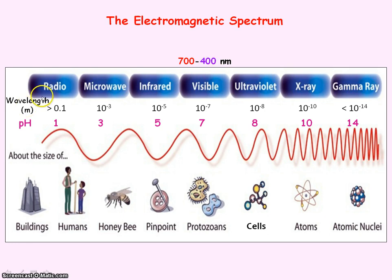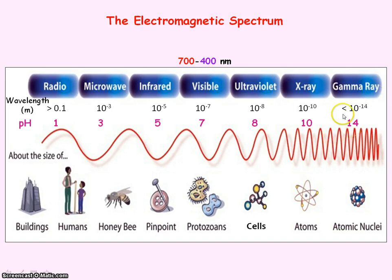Radio waves represent a pH of 1, so they have a wavelength in the order of 10 to the minus 1 metres, which is 0.1 metres. Gamma rays represent a pH of 14, so the typical wavelength of gamma rays is in the order of 10 to the minus 14 metres.